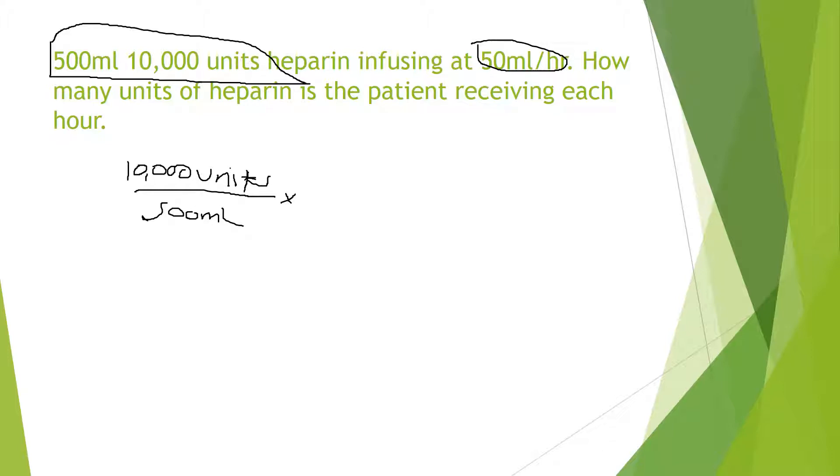Again, I'm just going to multiply by the flow rate that's given here, the 50 milliliters per hour. And we can double check to make sure we're doing this right by if we cross out milliliters, I should just be left with units per hour. Notice that it says units of heparin patient receiving each hour. It's the same thing as saying units per hour. So we plug that into our calculation and we got, again, I multiply across the top 10,000 times 50 and I divide that by 500. And I'm left with 1000 units per hour.